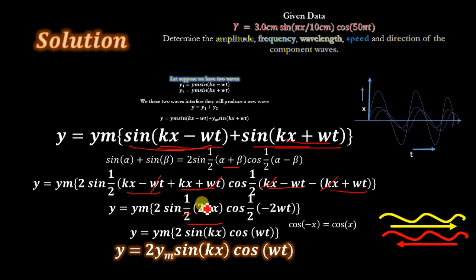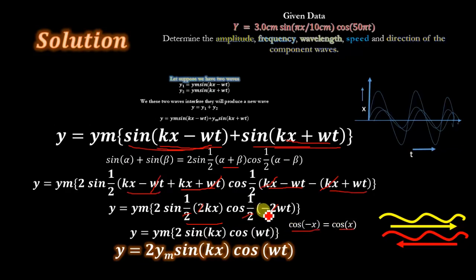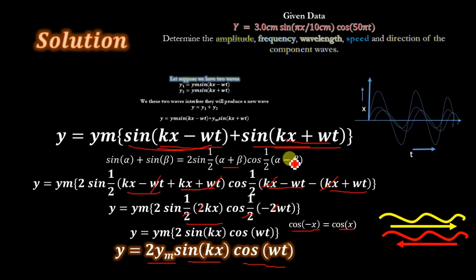The factor of 2 cancels appropriately, and since cos(−ωt) = cos(ωt), the final equation after superposition is y = 2ym sin(kx) cos(ωt). We will now use this equation to determine the amplitude, frequency, wavelength, speed, and direction of the component waves.